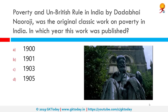Poverty and Un-British Rule in India by Dadabhai Naoroji was the original classic work on poverty in India. In which year was this published? It was published in 1901. The work focused on the drain of wealth from India to England during colonial rule. One of the reasons the drain theory is attributed to Naoroji is his decision to estimate India's national income and the effect colonization had on the country.